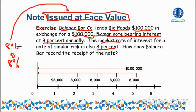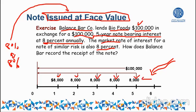The reason we call it issued at face is that the money we are paying today and the money we intend to receive after 5 years are the same. Looking at the timeline: 8% of $100,000 is $8,000, so $8,000 will be paid by Bio Food to Balanced Bar at the end of year 1, year 2, year 3, year 4, and year 5. These $8,000 payments form a stream of equal cash flows with equal time intervals — and since payments are made at the end of each year, this is an ordinary annuity.